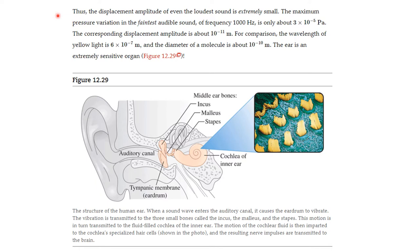The displacement amplitude of even the loudest sounds is extremely small. The maximum pressure variation in the faintest audible sound of frequency of 1000 Hz is only about 3 times 10 to the minus 5 pascals. The corresponding displacement is about 10 to the minus 11 meters. For comparison, the wavelength of yellow light is 6 times 10 to the minus 7 meters and the diameter of the molecule is about 10 to the minus 10 meters. The ear is an amazing piece of work. It is an extremely sensitive organ.